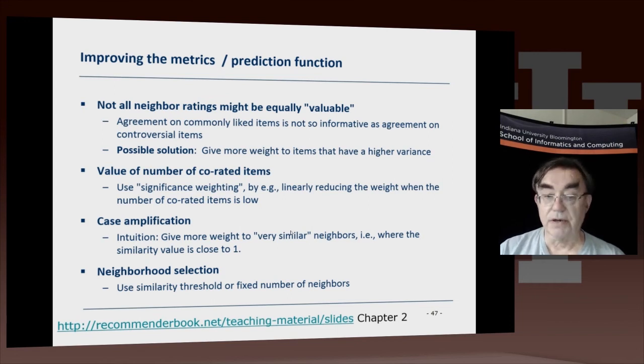You have a selection formula for the number of neighbors, which is either a fixed number of neighbors, or you use a similarity threshold. If the similarity is greater than 0.7, you'll include them, and otherwise you'd want something like that.